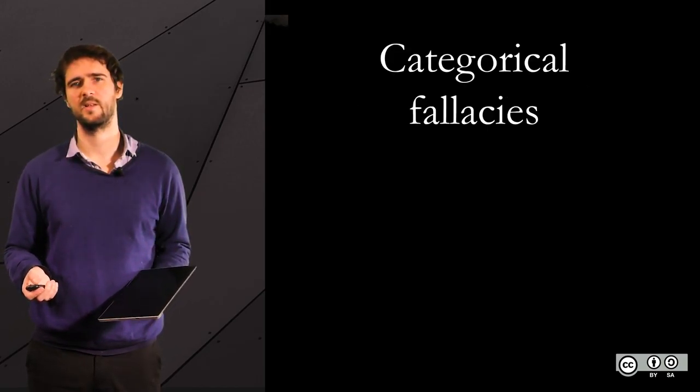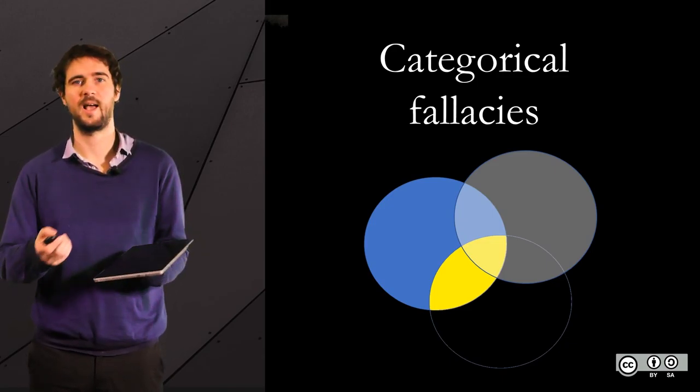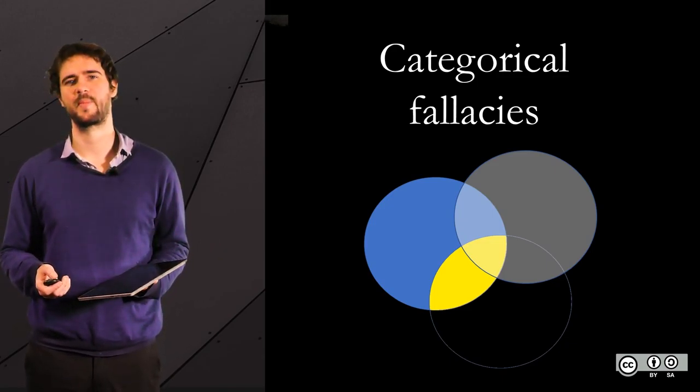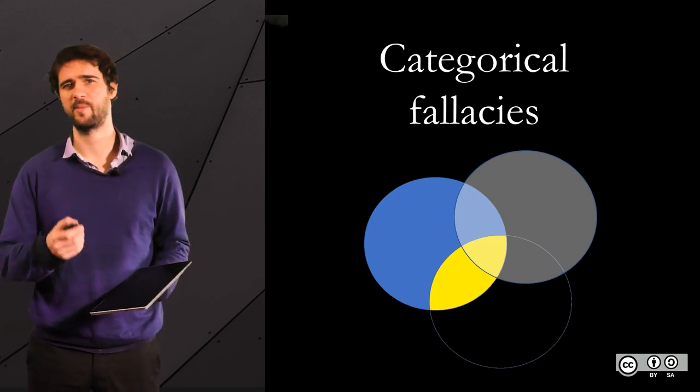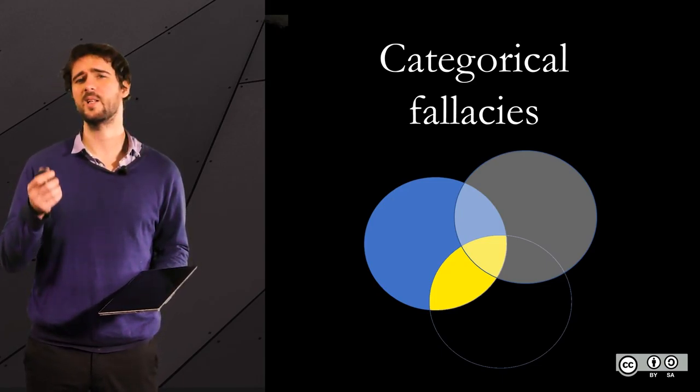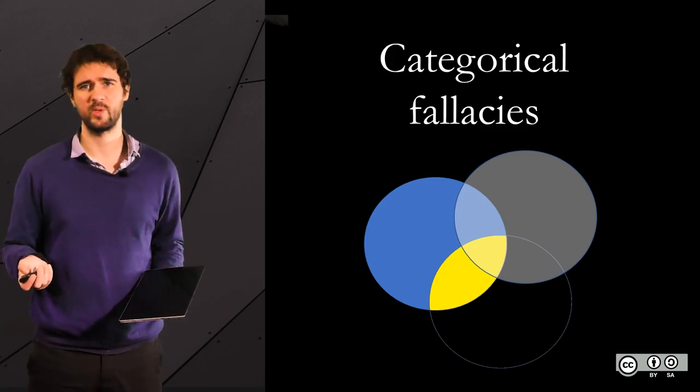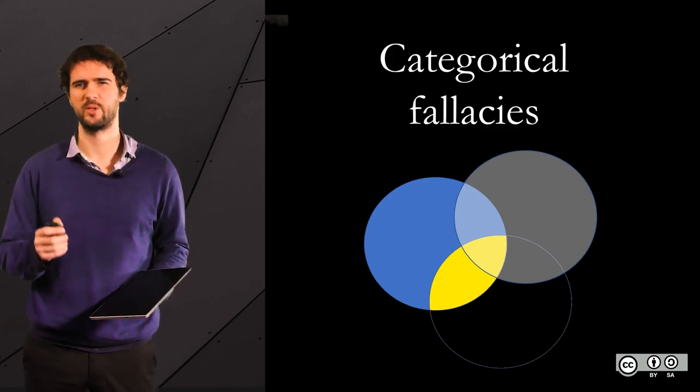We will talk a bit about probabilistic fallacies like the gambler's fallacy, or categorical or syllogistic fallacies like the Socrates is a cat example. We will also have the opportunity to work a bit on very simple truth tables and mathematical symbols.